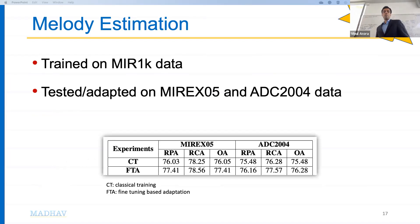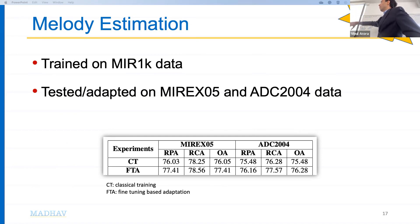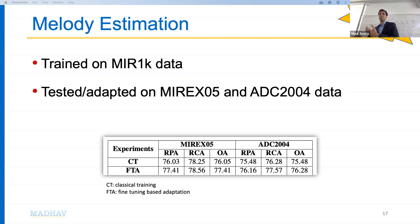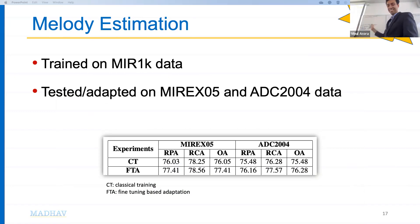We trained our model on MIR-1K data and then adapted it to MedleyDB or ADC datasets, seeing improvements. Classical training gave decent results, but fine-tuning based adaptation improved raw pitch accuracy and raw chroma accuracy by about 1%. This work used similar principles for sensor calibration as well.